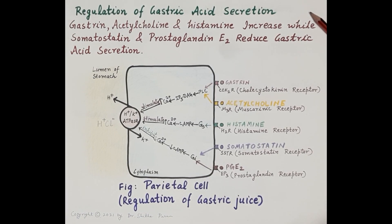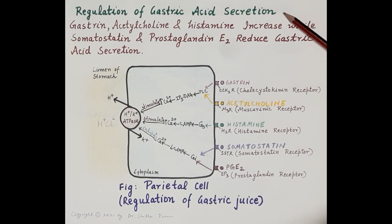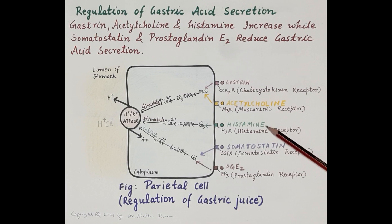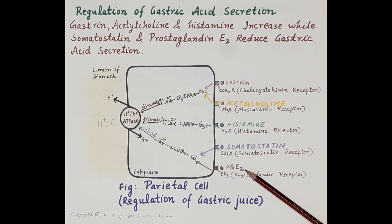Hello students. As we all know, gastric acid is secreted by the parietal cells. Today we are going to discuss the regulation of gastric acid — the factors or secretions that regulate the synthesis or production of gastric acid. Gastrin, acetylcholine, and histamine stimulate the parietal cells and increase the secretion of gastric acid, while somatostatin and prostaglandin E2 inhibit the secretion of gastric acid by the parietal cells.